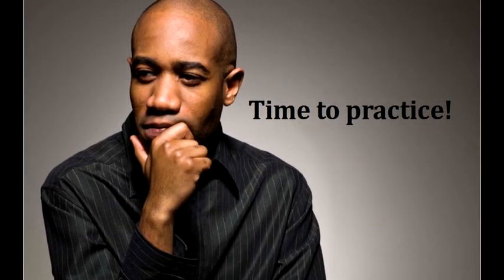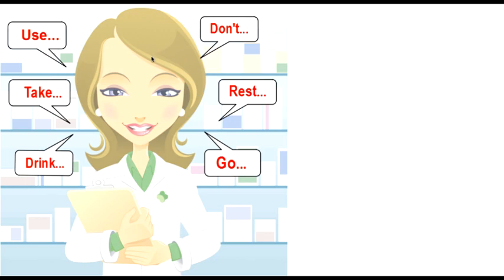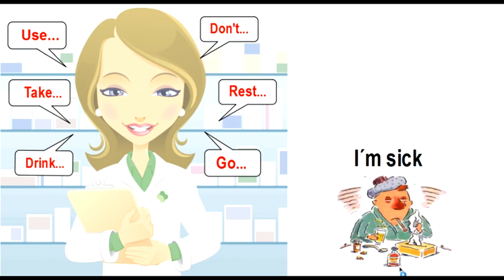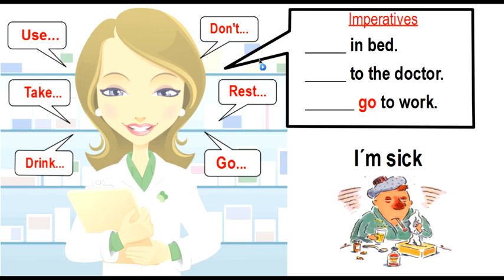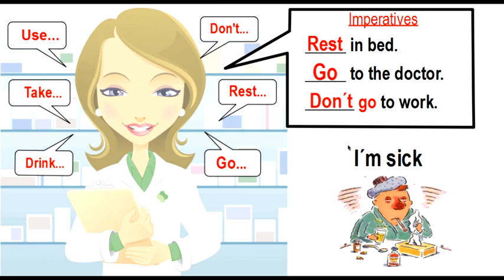Now it's time to practice. We are going to see different health problems and think of the correct imperative for different suggestions from the doctor or the pharmacist. For example, 'I'm sick.' The correct imperatives: rest in bed, go to the doctor, and don't go to work. My eyes hurt. Correct suggestions: use eye drops, don't watch TV, and don't work on the computer.